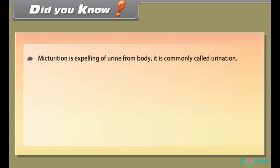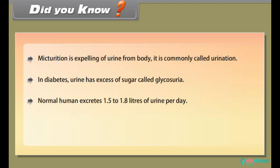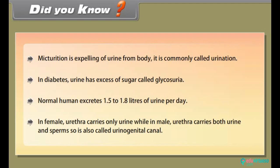Micturition is the expelling of urine from the body, commonly called urination. In diabetes, urine has excess sugar, called glycosuria. A normal human excretes 1.5 to 1.8 liters of urine per day. In females, the urethra carries only urine, while in males it carries both urine and sperms and is also called the urinogenital canal.